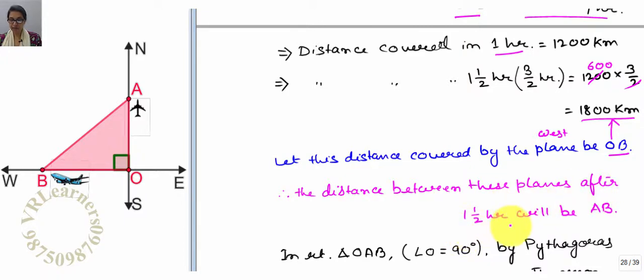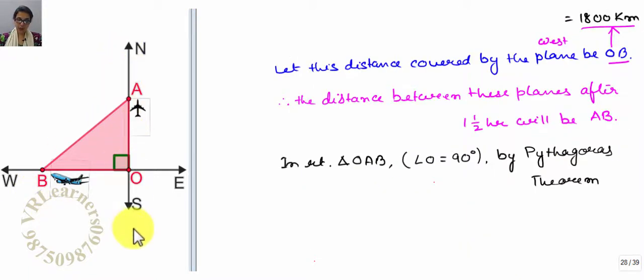This means the distance between these planes after one and half hours will be AB. North, south, east, these two lines are perpendicular to each other. These directions are perpendicular to each other.